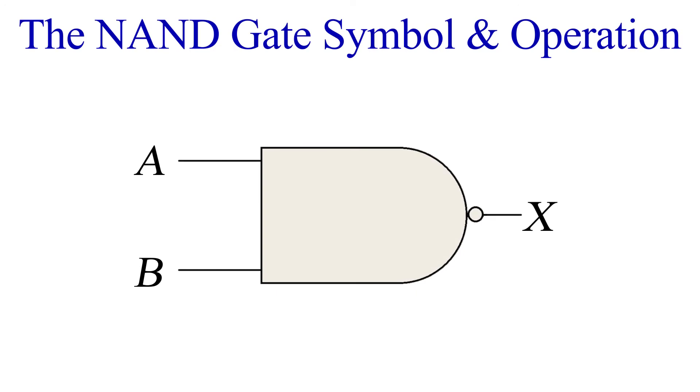You should notice that the symbol looks like that of the AND gate. However, the NAND has a bubble on the end indicating negation. Simply put, the NAND gate takes the output of the AND gate and inverts it.